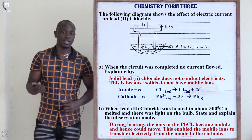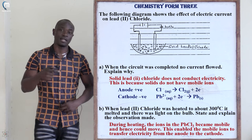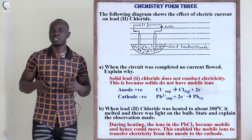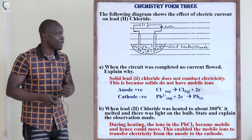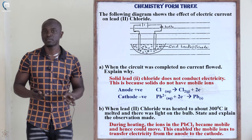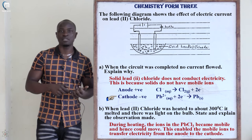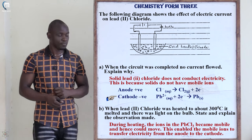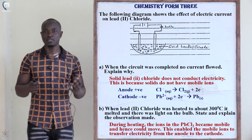If asked for the electrode equations: at the anode, chloride ions lose electrons to form chlorine gas (2Cl⁻ → Cl₂ + 2e⁻). At the cathode, lead ions gain two electrons to form lead metal (Pb²⁺ + 2e⁻ → Pb). These equations summarize the electrolysis of molten lead(II) chloride.